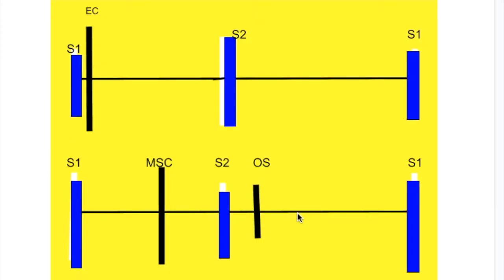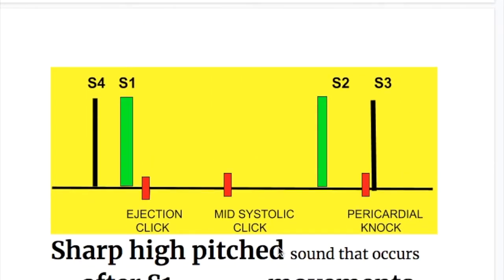Of these four sounds, which are systolic and which are diastolic? The ejection click and mid-systolic click are systolic sounds, whereas opening snap and pericardial knock are diastolic sounds.